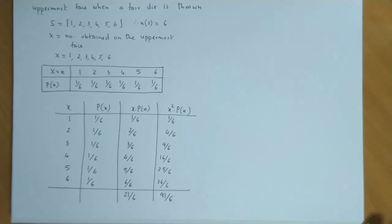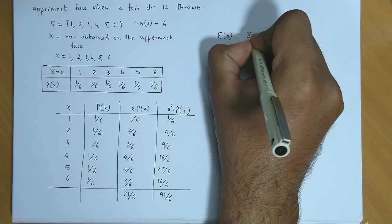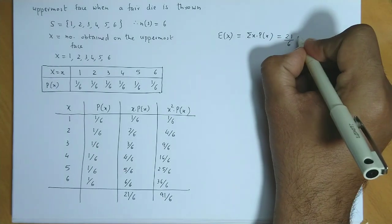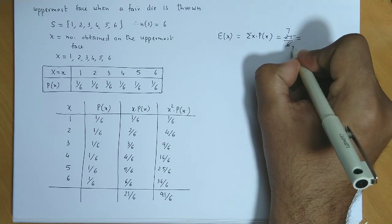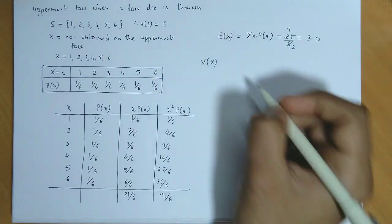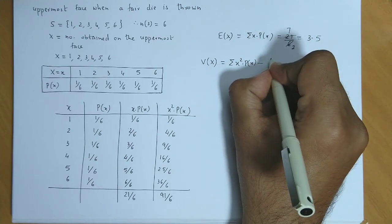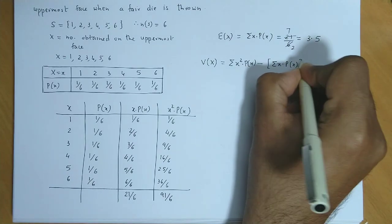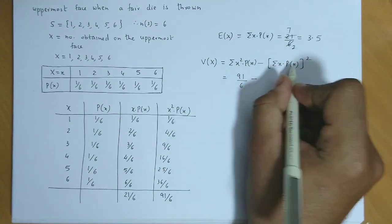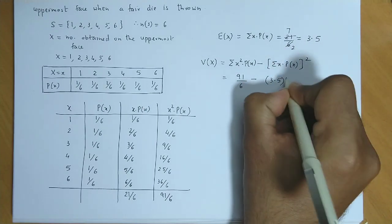We have the totals for x·P(x) and x²·P(x). The mean, that is the expected value E(X), is the summation of x·P(x), which equals 21/6. Reducing this: 21/6 = 3.5. So the expected value is 3.5. Next we find variance. Variance is given by the summation of x²·P(x) minus the square of the summation of x·P(x). Here we write 3.5 squared.